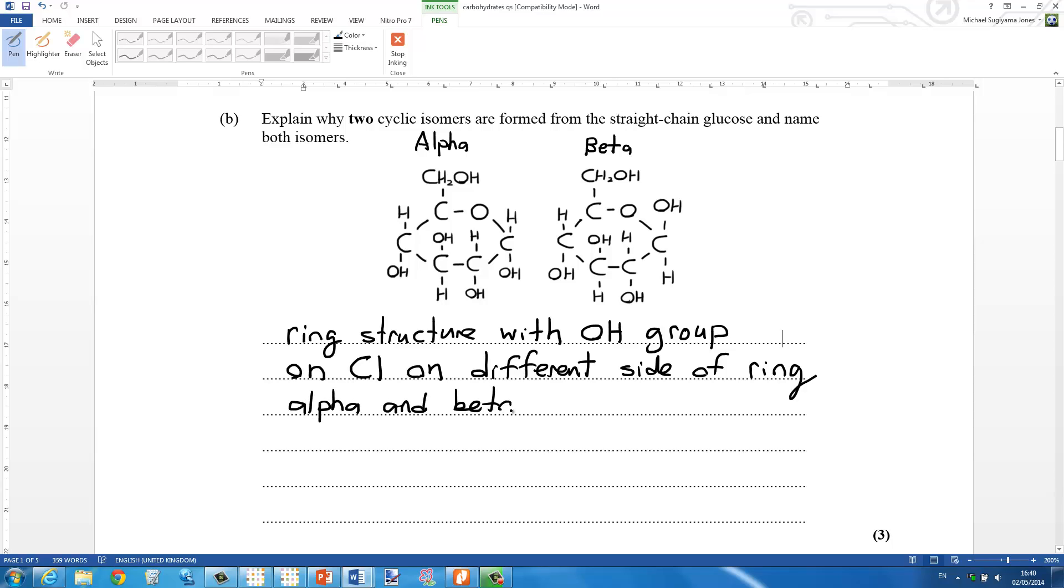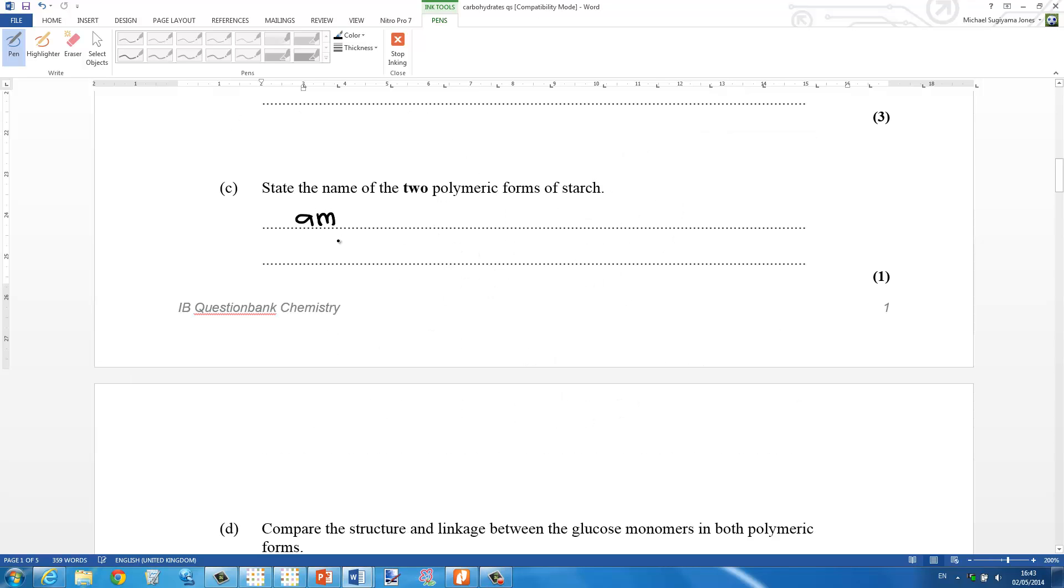And the two types are alpha and beta glucose. You need to know the difference between these two isomers. The two polymeric forms of starch are amylose and amylopectin.